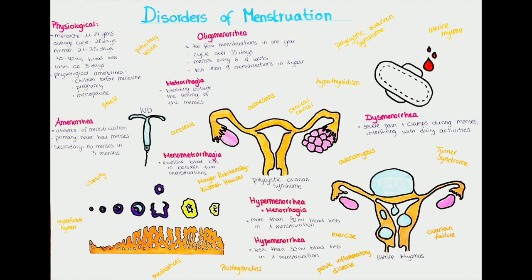In the ovaries there are thousands of oocytes, which a girl has from when she was born. At the age of 11 to 14, the first menstruation, called menarche, usually occurs. From then on, every month one egg develops and is released into the fallopian tube from the ovaries. The development of the oocyte starts as a primordial follicle, then develops into a primary follicle, and then by the help of follicle-stimulating hormone (FSH) into a secondary follicle, characterized by granular cells surrounded by theca cells. Around the oocyte is a layer called the zona pellucida.